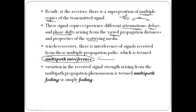The signals arriving include LOS, reflected, and scattered components. The receiver receives signals from multiple paths. The variation of received signal strength arising from this multipath propagation phenomenon is termed multipath fading.